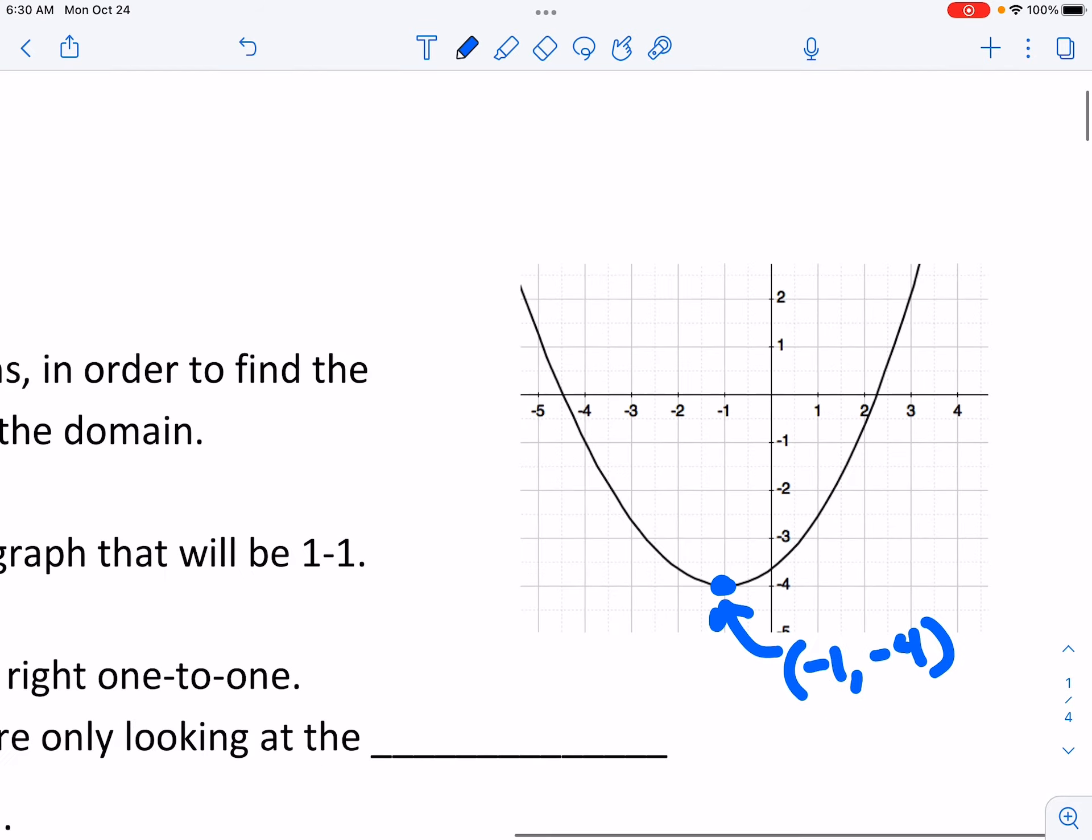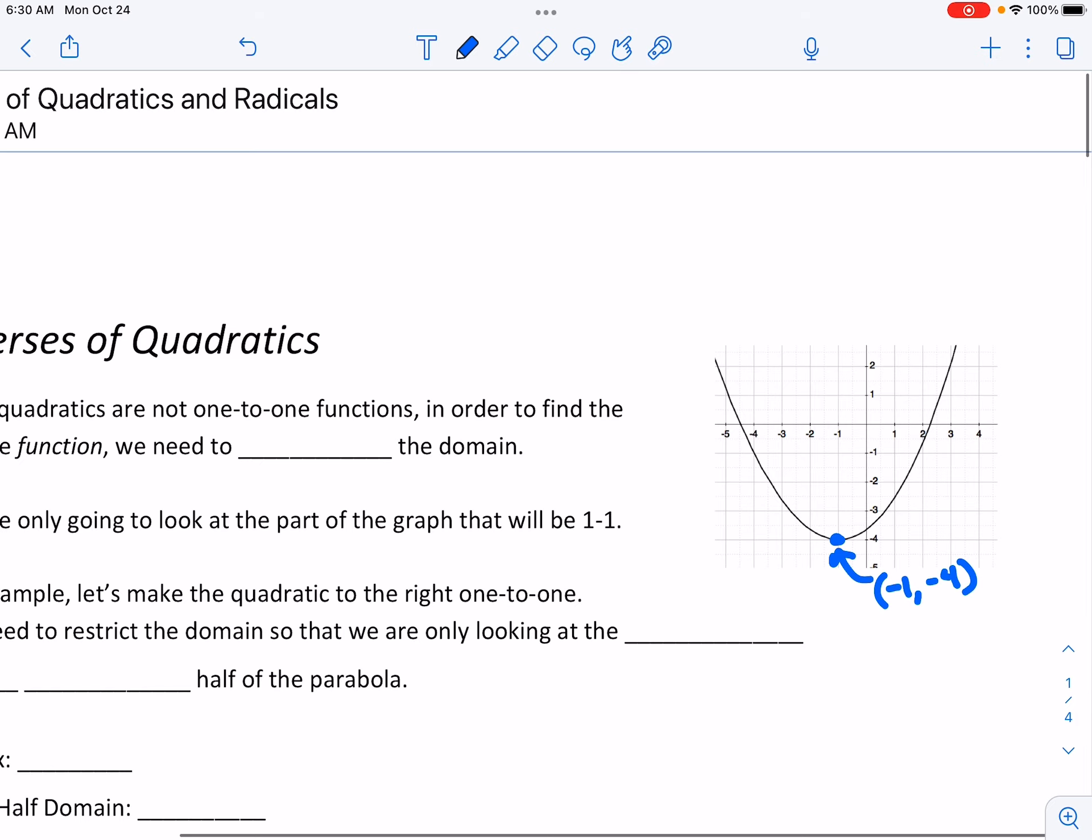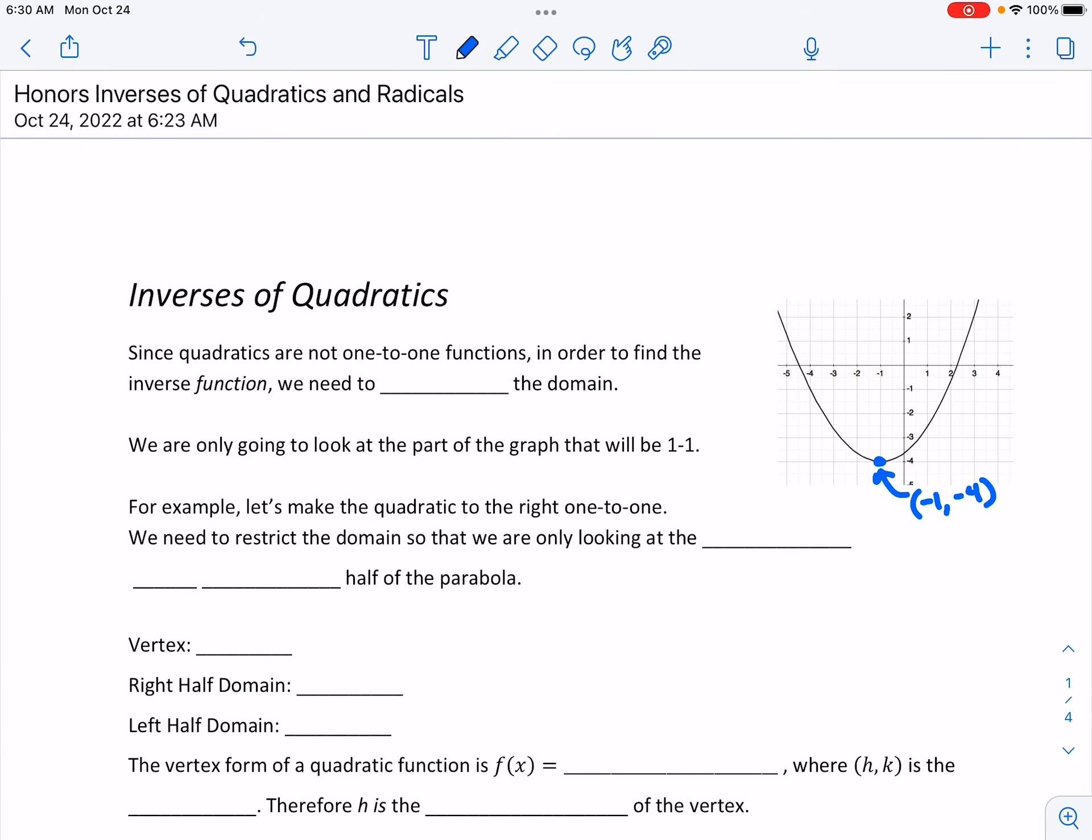When we do the inverse of a quadratic we run into the problem of it doesn't pass the horizontal line test. It will pass the vertical test and only hit once but horizontally we hit twice.